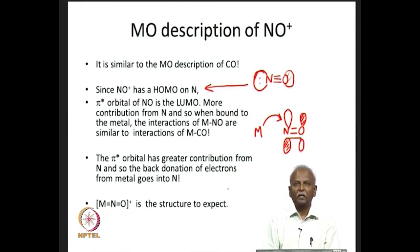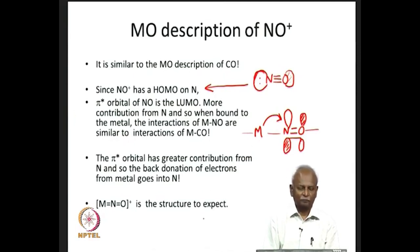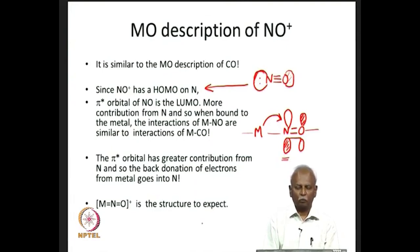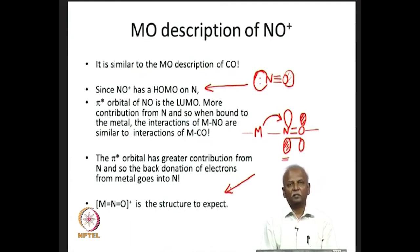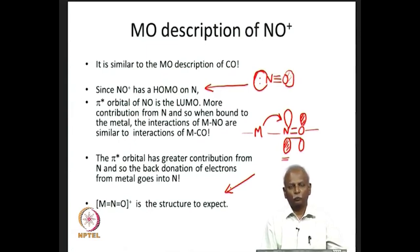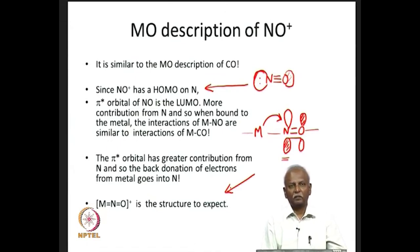The metal d orbitals — especially the dxz orbital if the z axis is defined along the bond — will donate electron density into the nitric oxide. Because nitrogen has greater contribution in the π* (larger orbital size on nitrogen), the overlap between the metal and nitrogen turns out to be significantly more than the π repulsion from the filled π orbital on nitric oxide. This is very similar to what we would expect for carbon monoxide and we can expect this type of resonance structure for M-NO⁺ as well.